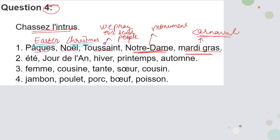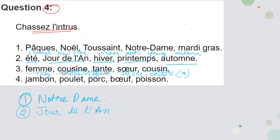Next is: femme, cousine, tante, sœur, cousin. Femme means woman/lady. Cousin and cousine are cousins — masculine and feminine. Tante is your aunt and sœur is your sister. We can see that these are all types of family relations, but 'femme' (woman/lady) is not a type of relation. So for the third one, the correct answer is femme.